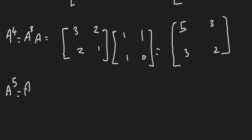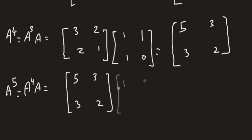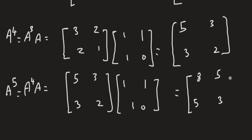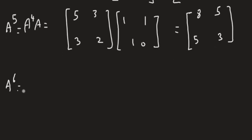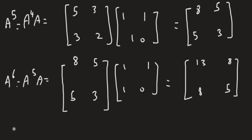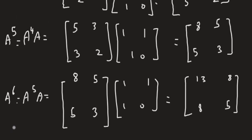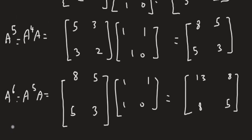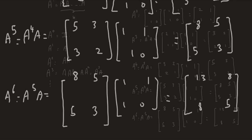A^5 is A^4 times A, giving [8, 5; 5, 3]. Then A^6 is A^5 times A, which gives [13, 8; 8, 5]. This is how you compute successive powers of a matrix.